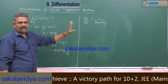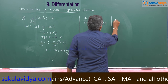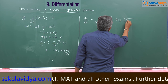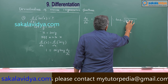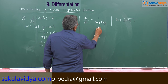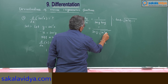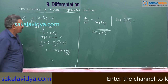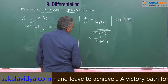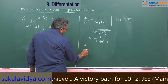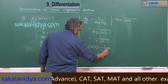Here secant y we can write as x, but we have to write tan y in terms of x. We know that tan theta is equal to root of secant square theta minus 1. So this can be written as 1 by secant y times root of secant square y minus 1. Since secant y is equal to x, this becomes 1 by x root of x square minus 1. Therefore, d/dx of secant inverse x is equal to 1 by x root of x square minus 1.